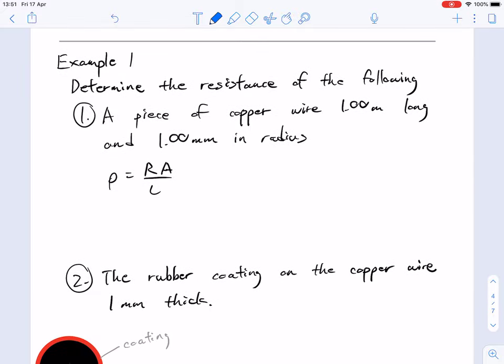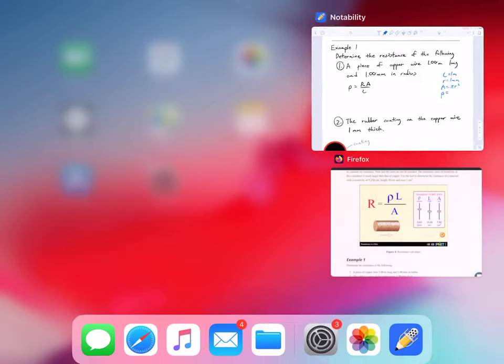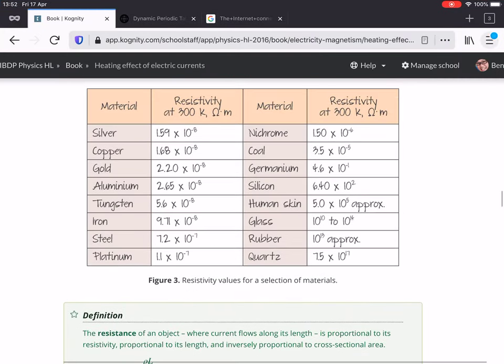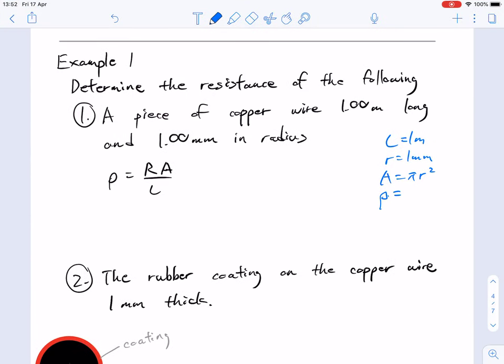Let's get into some calculations. We need to determine the resistance of the following. We have a piece of copper, one meter long, so L equals one meter. Radius is one millimeter, which means we calculate the area using pi r squared. We're given this is copper, so rho is the value for copper. Looking that up: 1.68 times 10 to the minus 8.